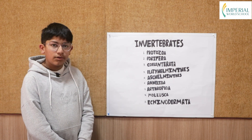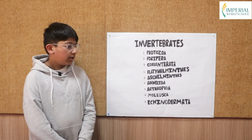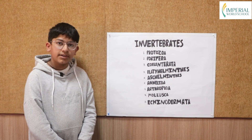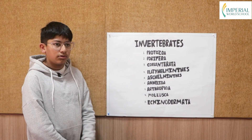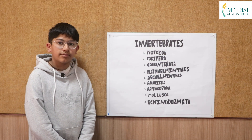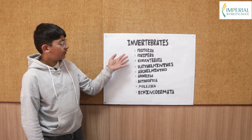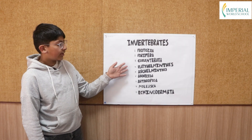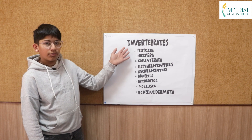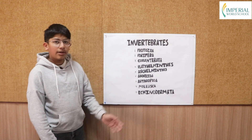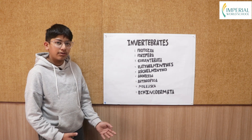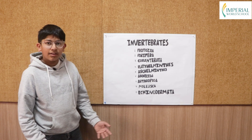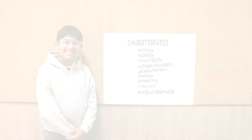And finally, Echinodermata — species that have a spiny skin. For example, a starfish. So these were the distinguishing characters of the phylums in invertebrates. I hope you enjoyed this video and found it informative. Thank you, bye.